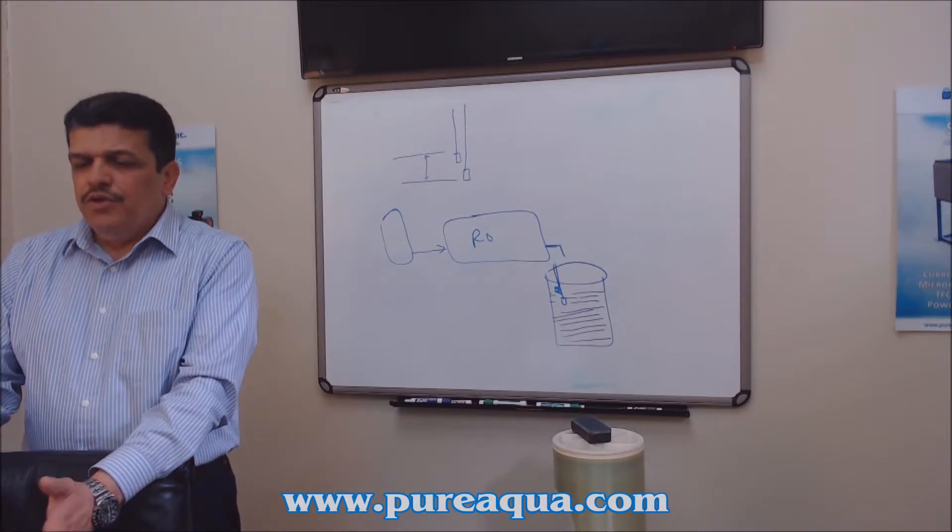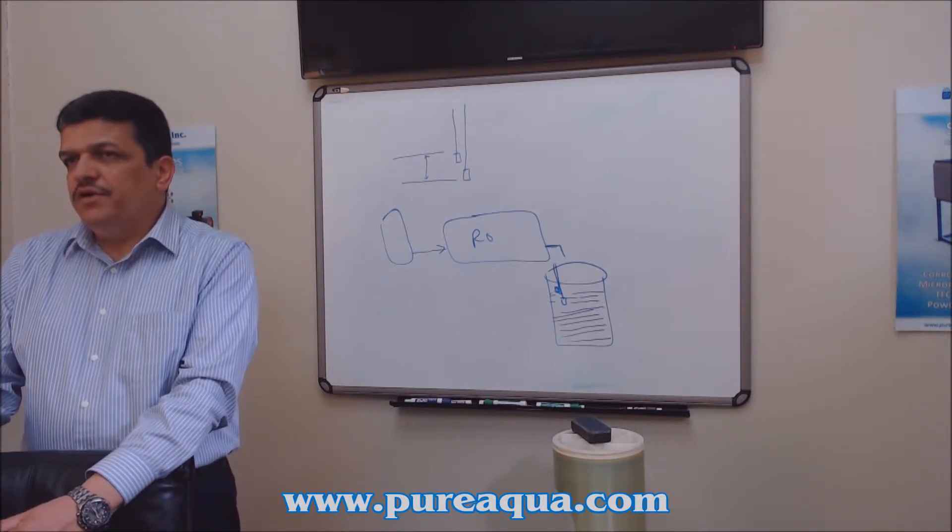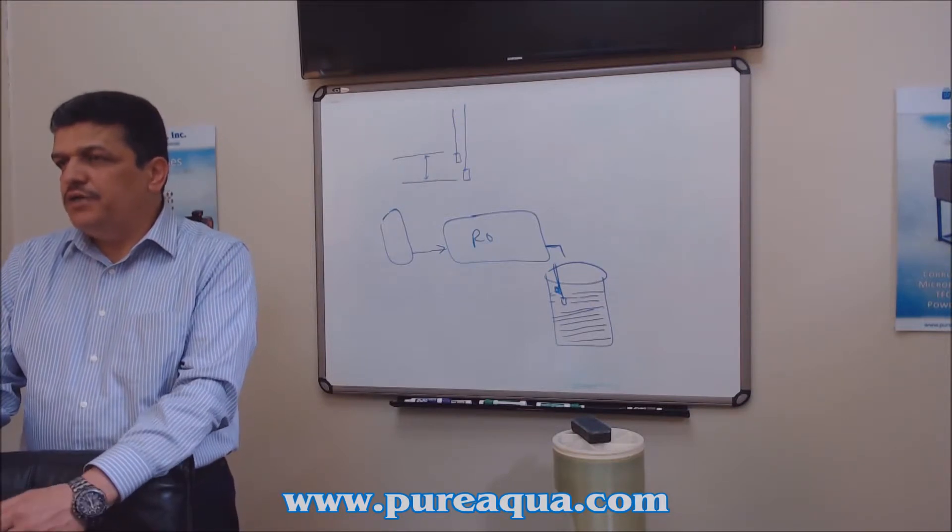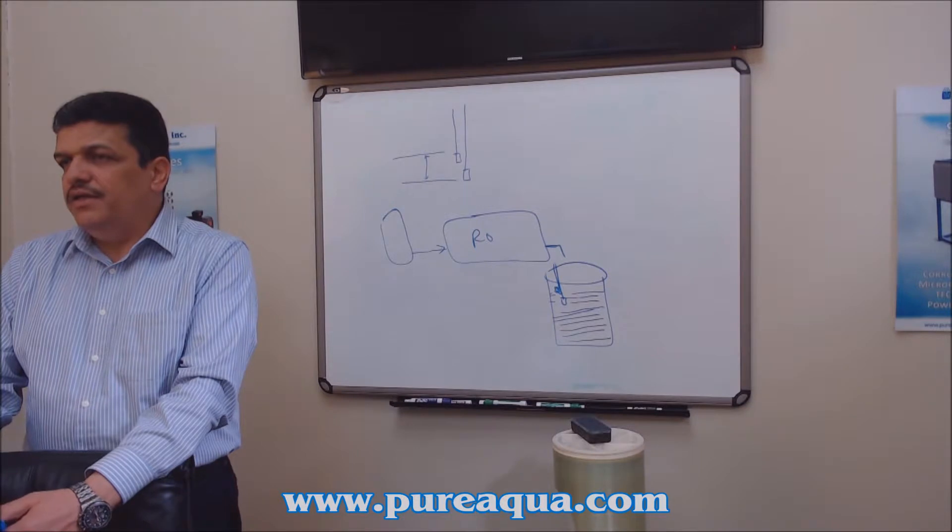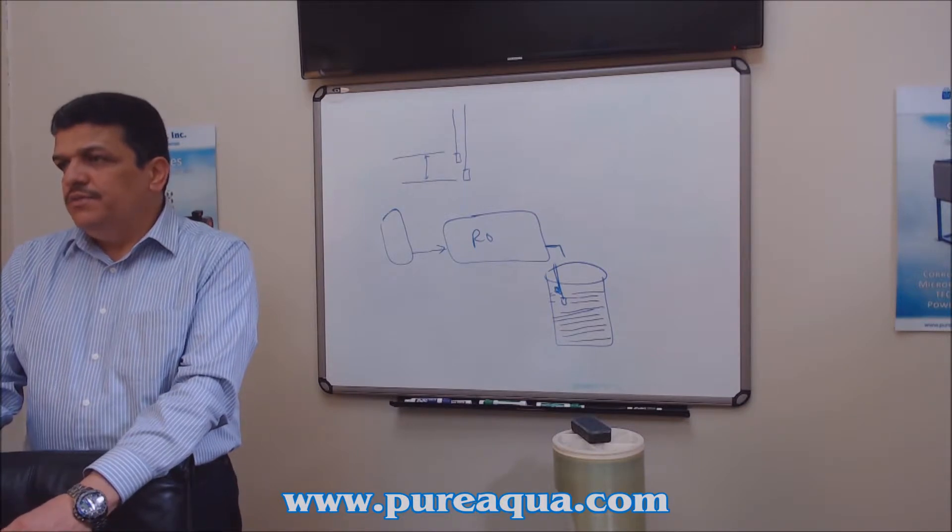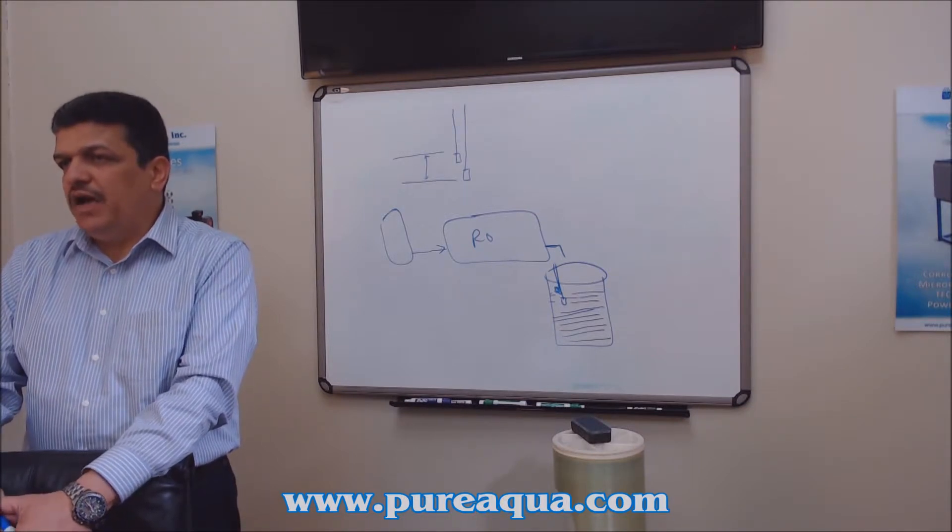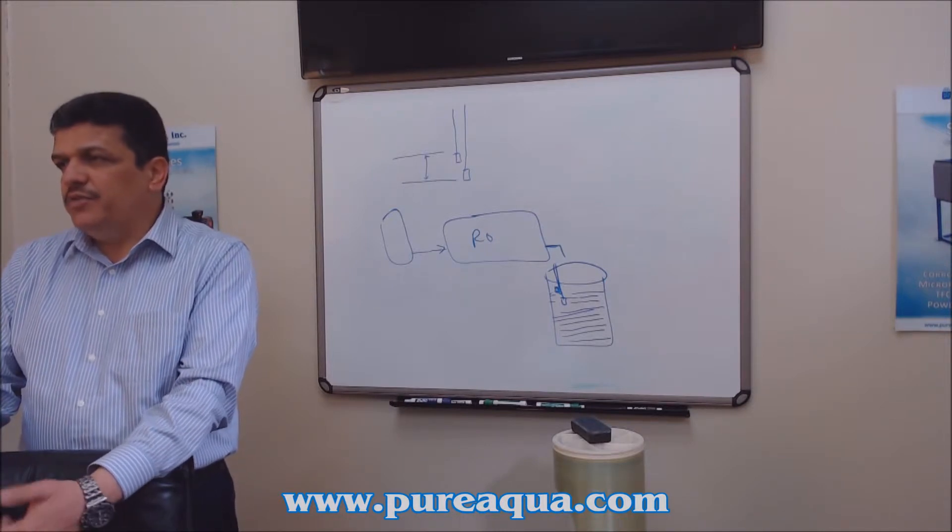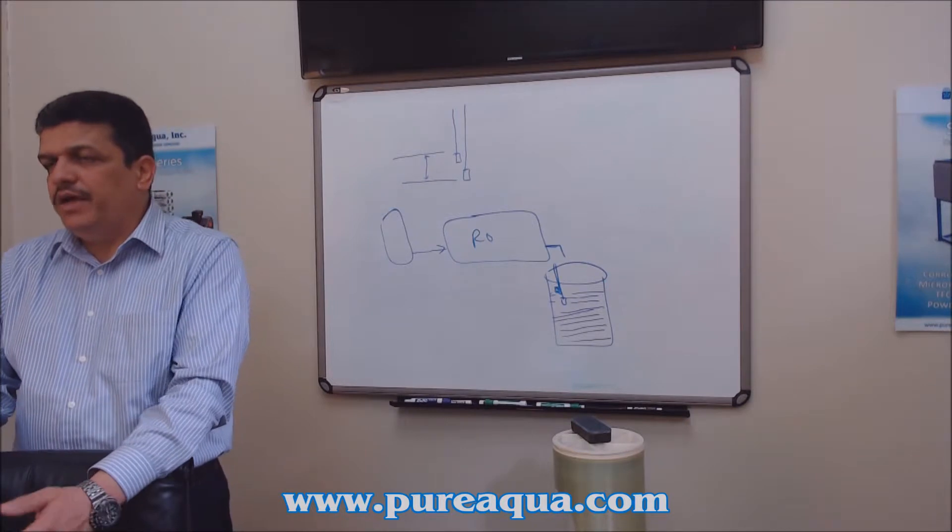Water softener is a good pre-treatment for a lot of different processes like reverse osmosis. It prevents membranes from being fouled because it takes out the big ions like calcium, magnesium, and traces of iron and manganese.